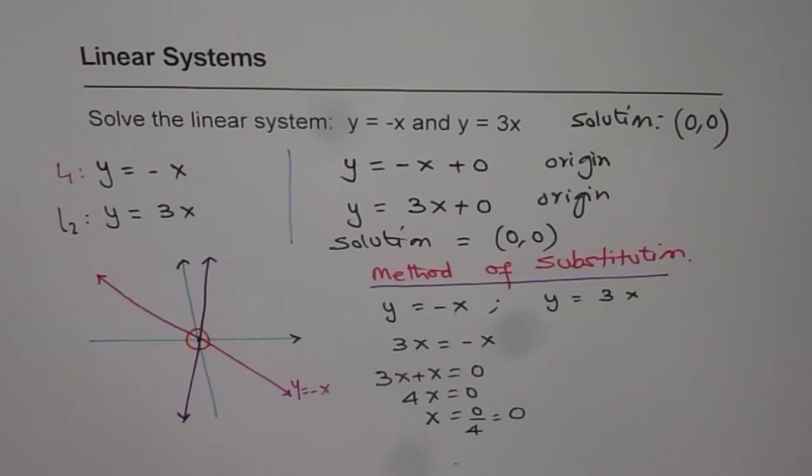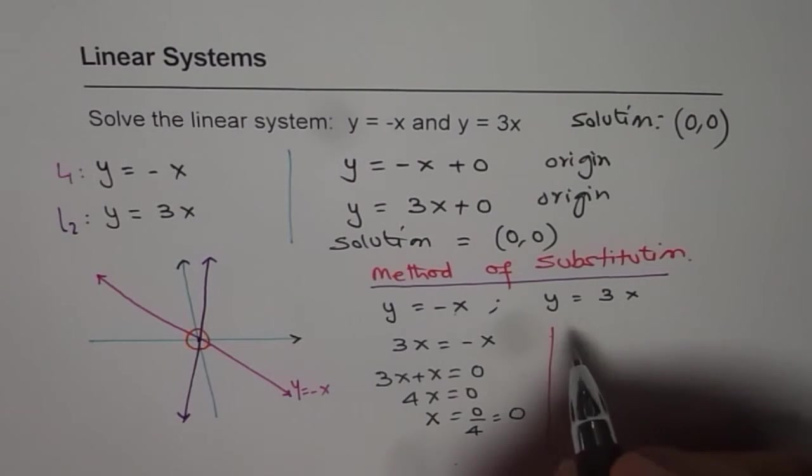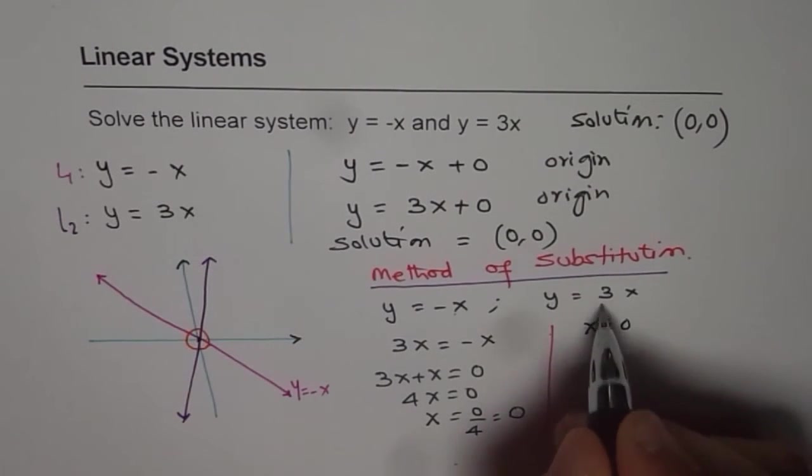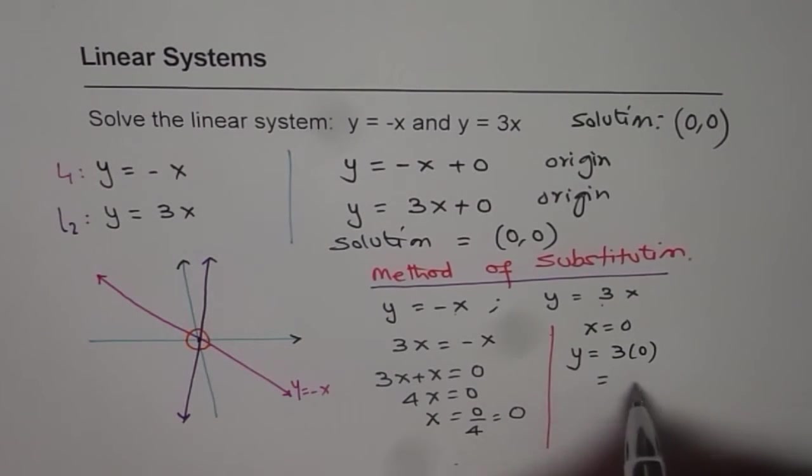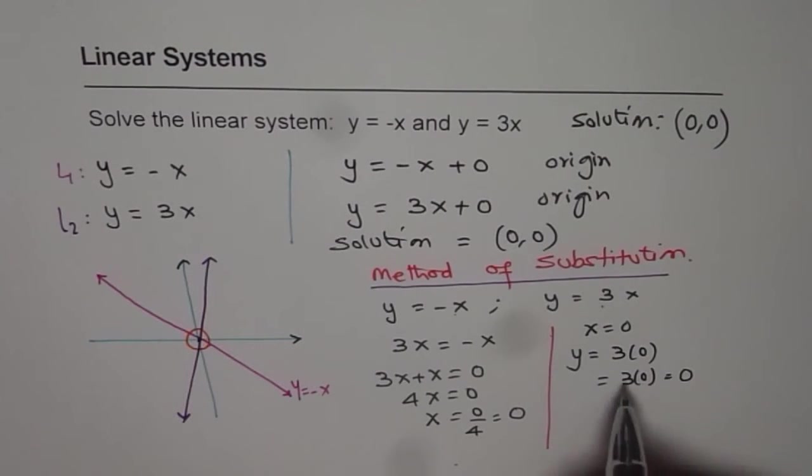Now, since x is 0, what is y? So we'll substitute x equals 0 in one of our equations. So we can say y equals 3 times 0 which is also 0. So we get (0,0) as our solution.